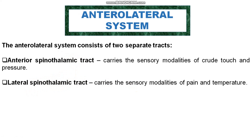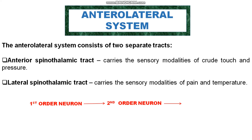The sequence of the anterolateral system is the same as the dorsal column medial lemniscus. The first order neuron carries the sensory information from the skin and transfers it to the second order neuron. The second order neuron carries the information from the first order neuron and transfers it to the third order neuron. The third order neuron transfers the sensory signals to the cerebral cortex.